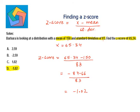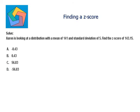Next problem. Solve: Aaron is looking at a distribution with a mean of 141 and standard deviation of 5. Find the z-score of 143.15. So x becomes 143.15.